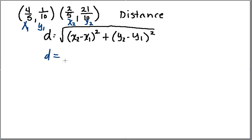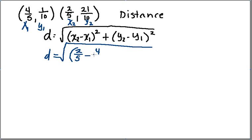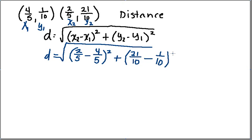So distance is going to be equal to the square root of — my x2 in this case is two-fifths, minus x1, which is four-fifths, and then I'm going to square that, plus y2, which in this case is twenty-one over ten, minus y1, which in this case is one over ten, and then I've got to square that whole thing.